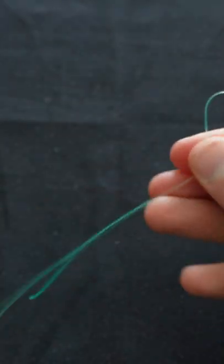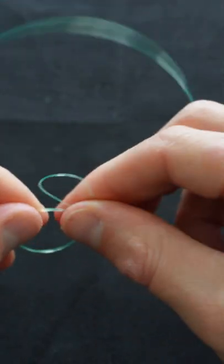Hello again, Fishalots. In this video I'm going to show you how to tie the surgeon's loop knot. First, you're just gonna fold over your line just like that, and then you're gonna make a second loop.